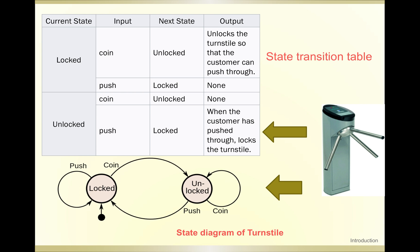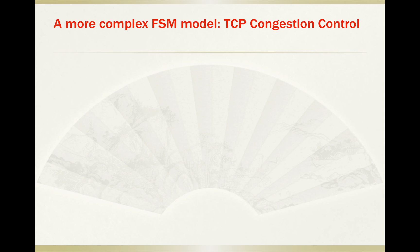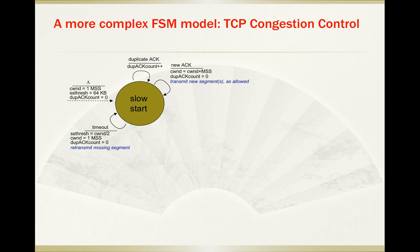We can draw a state transition table that reflects the working mechanism of the turnstile, showing the relationships between the current state, next state, input, and output. We also have a state diagram of the turnstile — as you can see, the two states can transition between each other under certain conditions.